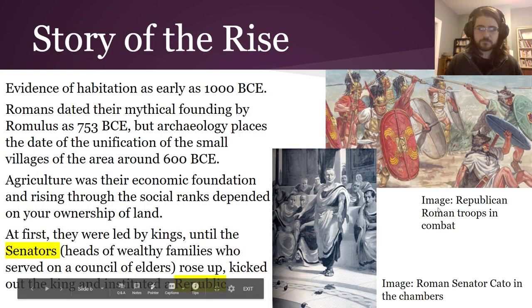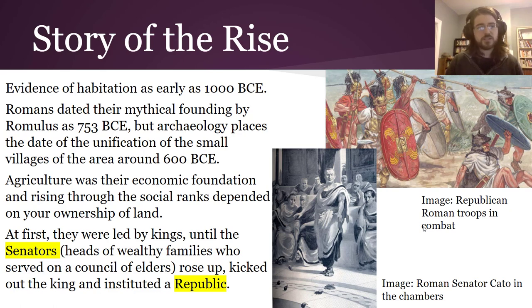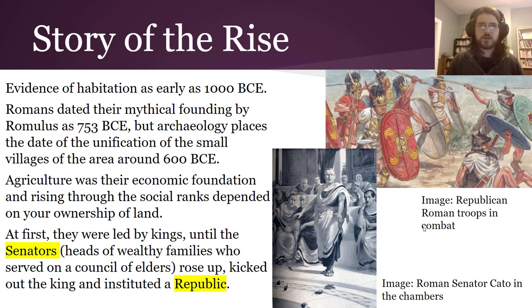We have evidence of habitation in the area of Rome as early as 1000 BCE. The Romans had their mythical founding date as 753 BCE. We know from archaeology that around 600 BCE the little villages on the different hills merged together — that's a pretty good date for the archaeological founding of the city.